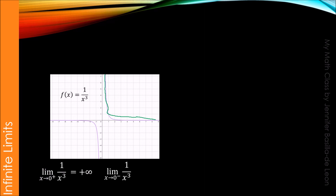Try also evaluating the limit of 1 over x cubed as x approaches 0 from the left. Based on the graph, as x approaches 0 from the left, the graph decreases without bound. That means that if we substitute a value closer to 0 from the left, the result will become smaller and smaller, but will never be 0. Hence, the limit of 1 over x cubed as x approaches 0 from the left is negative infinity.